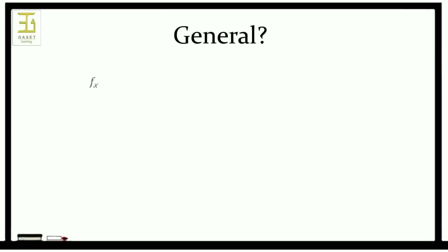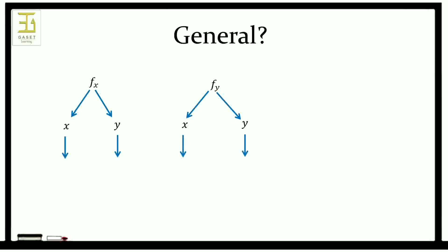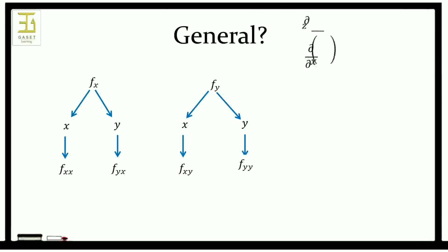Generally speaking, if f_x and f_y are functions of x and y respectively, then we can differentiate f_x and f_y again with respect to x and y. That is, dou by dou x of dou z by dou x is equal to dou squared z by dou x squared.